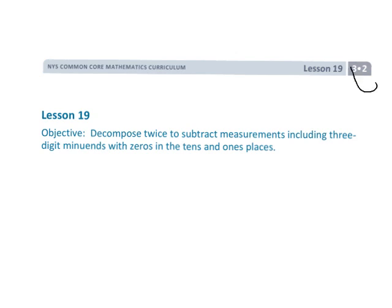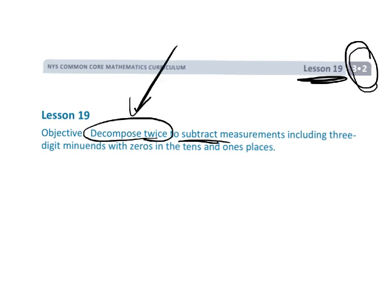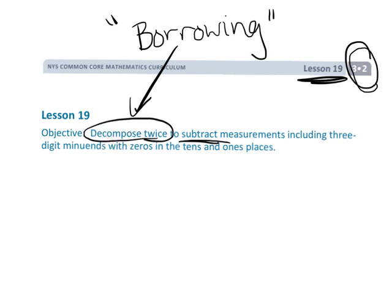This is Grade 3, Module 2, Lesson 19. We're going to continue subtracting, and this time we're going to do a lot more borrowing — although in Engage New York we call it decomposing. The big theme this time is we are really going to be using the standard algorithm rather than place value charts and number disks, and we'll be using the proper vocabulary throughout.